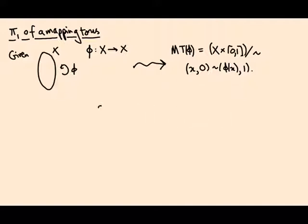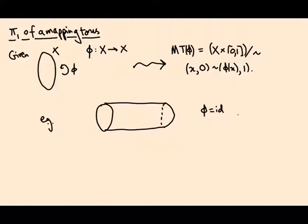So let's see what that might look like. You take your space X and multiply it with an interval, then you identify points on this end with points on this end in some way. For example, if φ was the identity, you're just going to get X times a circle, because you're doing X times the interval identifying the points at zero and the points at one. We could represent that in this picture where X is a circle by drawing an arrow to indicate this circle is identified with this circle so that the arrows match up.